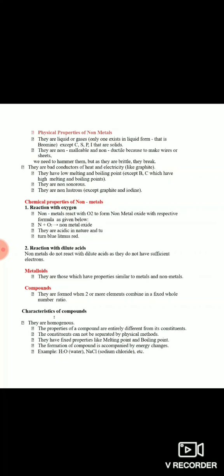Agar hum characteristics dekhte hain compounds ke - compounds homogeneous hote hain. Homogeneous ka matlab hota hai ek jaisa - uniform composition. Agar aap ek glass paani dekhein, aisa kabhi nahi hoga ki kisi jagah pe hydrogen hai to kisi jagah pe oxygen - poore paani mein composition H₂O ki same rahegi. Moreover, the properties of a compound are entirely different from its constituents.